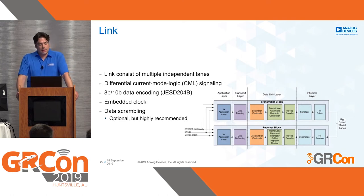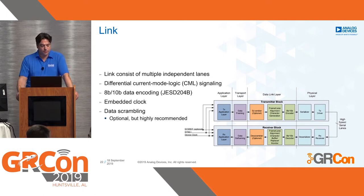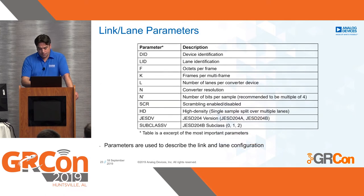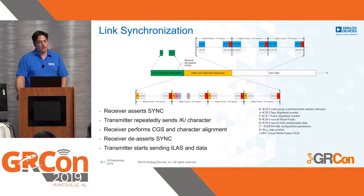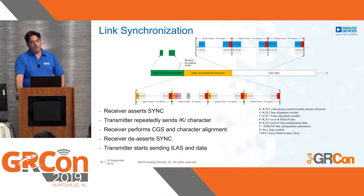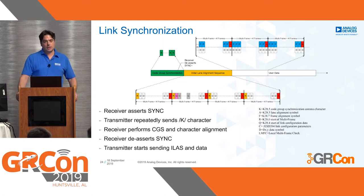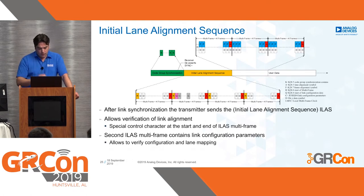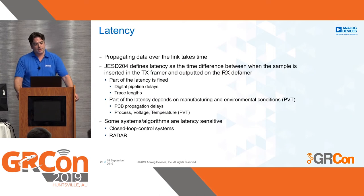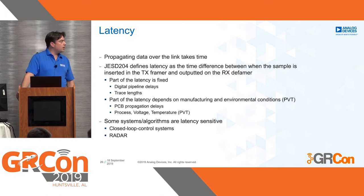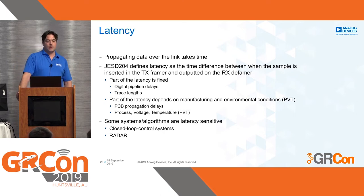The link consists of multiple independent lanes. It uses 8B/10B encoding and has an embedded clock, and it also supports data scrambling. How does link synchronization work? The receiver asserts the synchronization strobe, and then the transmitter repeatedly sends the K-character. The receiver performs code group synchronization and character alignment. After that's done, the receiver de-asserts sync, and the transmitter sends the initial lane alignment sequence followed by data.